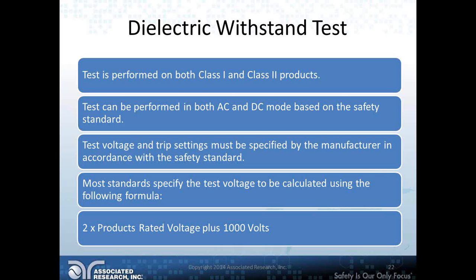Test voltage and trip settings must be specified by the manufacturer in accordance with the relevant safety standard. As a rule of thumb, most standards specify the high pot test voltage using the formula: twice the product's rated voltage plus 1,000 volts. So for a 120-volt product, the high pot test voltage would be 1,240 volts.